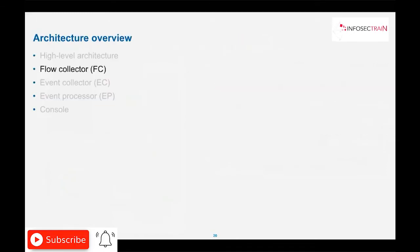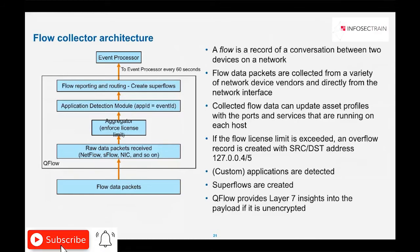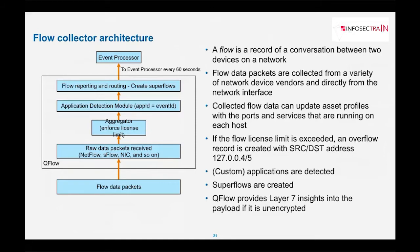A flow is a record of conversation between two devices on the network — these are network devices, not just any device. Flow data packets are collected from a variety of network devices and can also be collected directly from the network interface card. The data is sent to the aggregator, which aggregates based on protocol so it's easier for QRadar's event processor to process. The license limit is also enforced at this stage, and then a mapping step occurs where application ID is mapped to event ID.